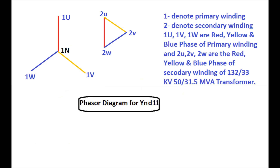Now for the vector group test of YND11 — the phasor diagram for YND11 is shown in this figure. Here, 1U, 1V, and 1W are the red, yellow, and blue phases of the primary or HV winding, and 2U, 2V, and 2W are the red, yellow, and blue phases of the secondary or LV winding of the power transformer.